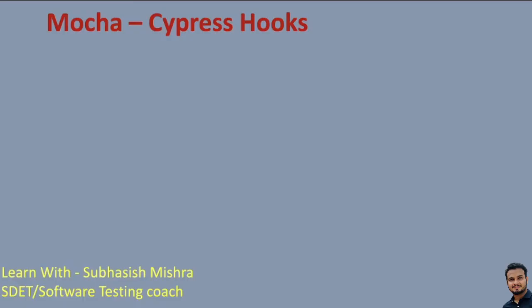The very first thing we will understand is what is Cypress hooks. Whenever we develop any test automation framework, one key concept we need to handle is the pre or post condition for a test case or test suite. While testing or writing automation test cases, you can come across multiple situations where a specific action needs to be performed before or after either each test case or before or after all the test cases in the test suite. In that case, you cannot write the same piece of code multiple times.